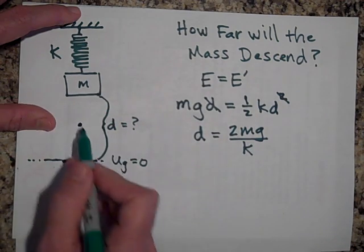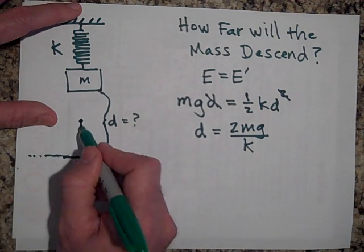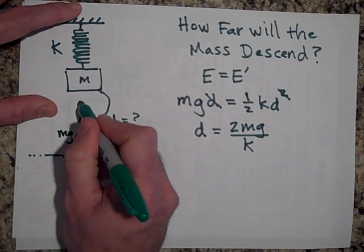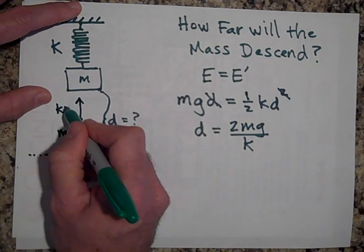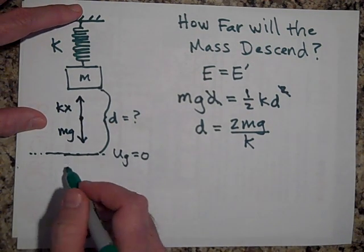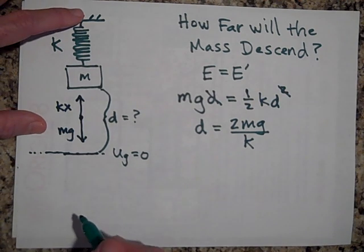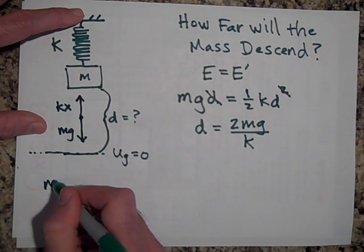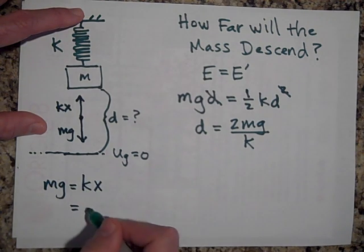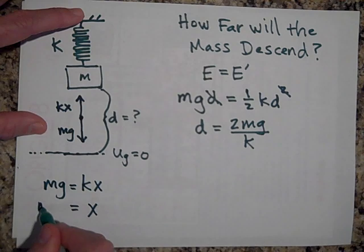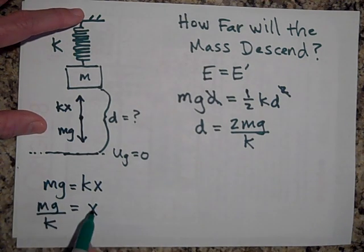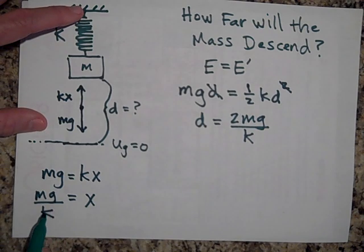Well if it's resting there, then that means that the free body diagram looks like this: MG and KX. So it looks like MG will equal KX, and so X in that case is equal to MG over K. That's how much the spring will be stretched, MG over K. That's our equilibrium position.